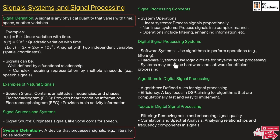Digital signal processing can also use hardware systems that employ logic circuits for physical signal processing. These systems may combine both hardware and software for efficient processing. Algorithms in digital signal processing define the rules for signal processing. Efficiency is the key focus in DSP — algorithms should be computationally fast and easy to implement.